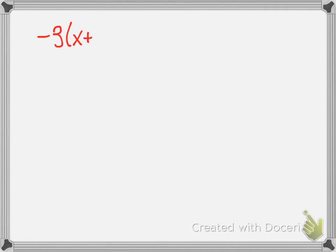All these problems come from the worksheet called solving quadratics, vertex or factored form. Question 3 on the quiz was already in vertex form, and all you had to do was rearrange it to solve it. Remember, we don't have to complete the square — it's already been done. We don't have to FOIL this out. We just want to get x by itself, so we peel the layers.